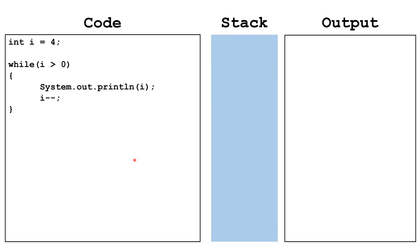Let's trace out this while loop. We start by declaring i and initializing it to four. Next, we check: is i greater than zero? A while loop doesn't necessarily run even one time — if this first evaluates to false, we skip the entire body. Since this evaluates to true, we execute the body: System.out.println(i), which is currently four. Then we decrement i by one, go back to the top, check is i still greater than zero — it is. We continue and output the value of i, which is three. Decrement i by one.